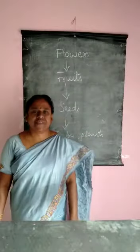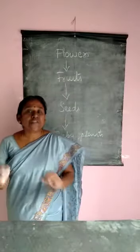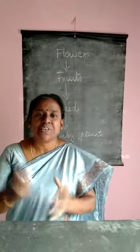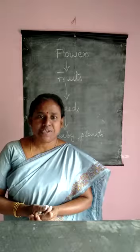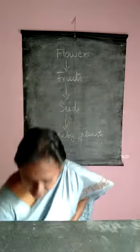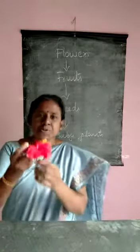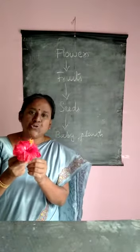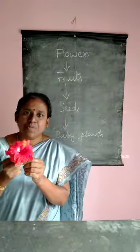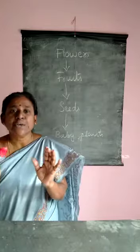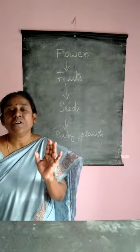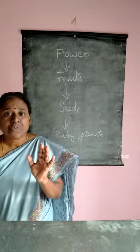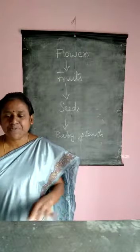Next is Flower. Flower is the beautiful part of the plant. You know this flower — it is shoe flower. The flowers are the beautiful parts of plants.